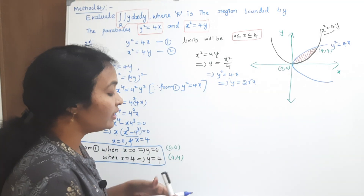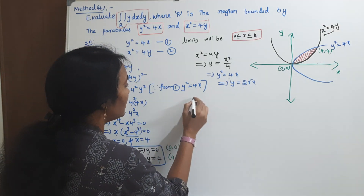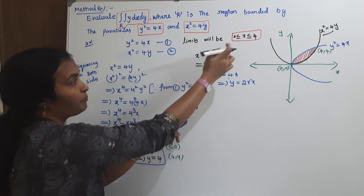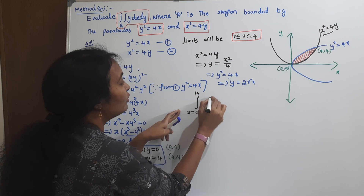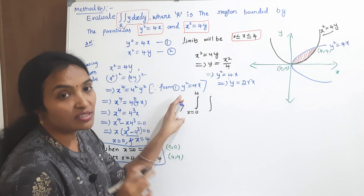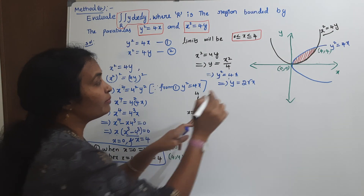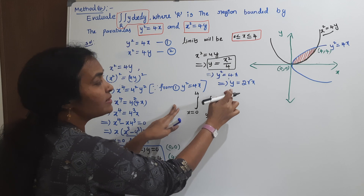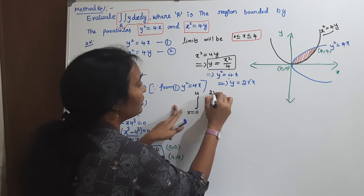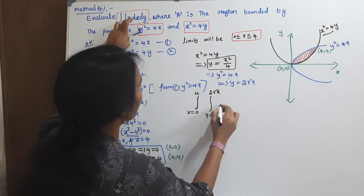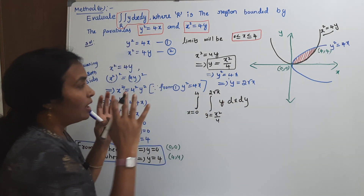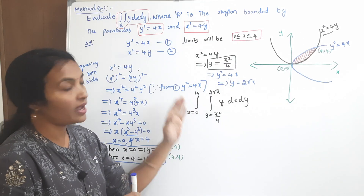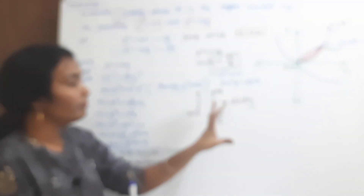Now I will evaluate the double integral. The x limit is 0 to 4, and the y limit is x²/4 to 2√x. So the double integral is: ∫₀⁴ ∫_{x²/4}^{2√x} y dy dx. We have found the bounded region and the limits. Now simplify this to get the answer.